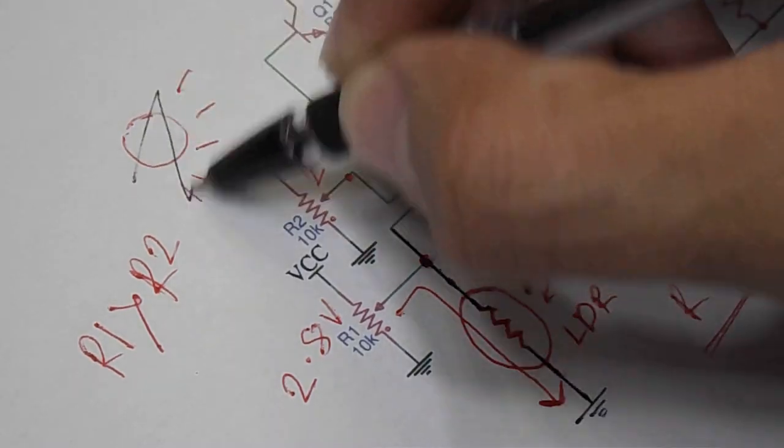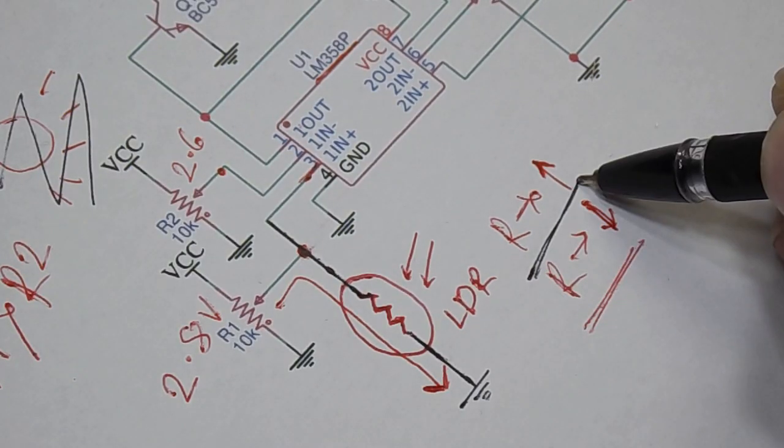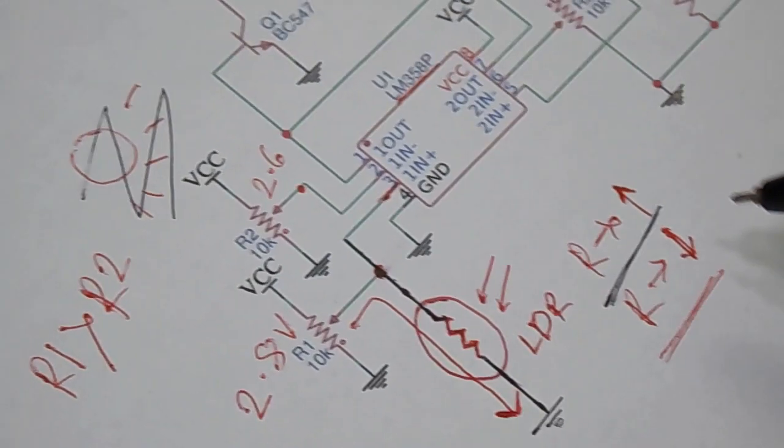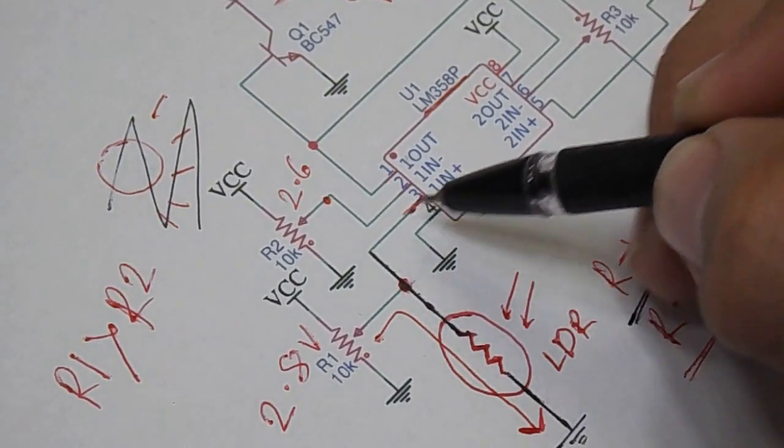In the darkness, the resistance of the LDR will be highest. Then the voltage at non-inverting terminal is greater, hence LED strip will glow.